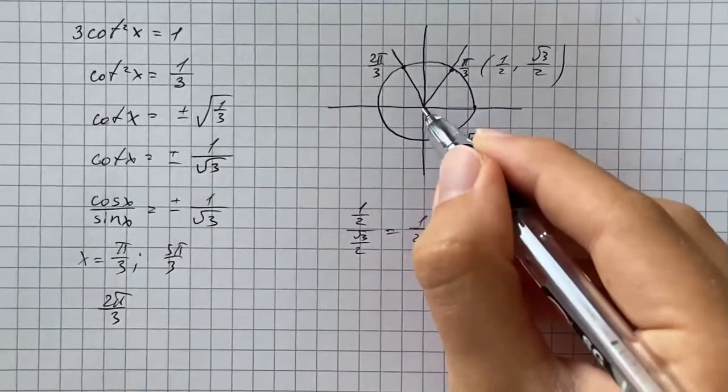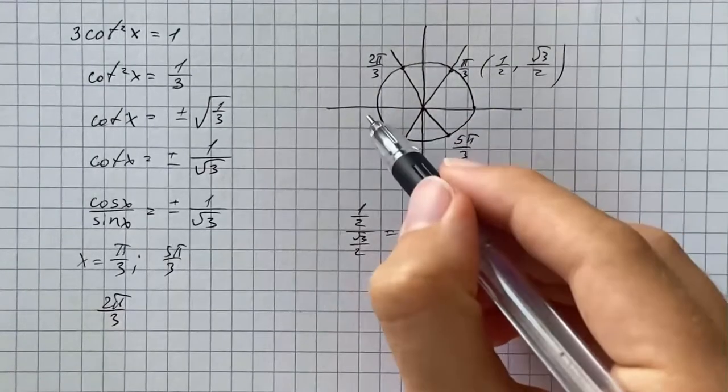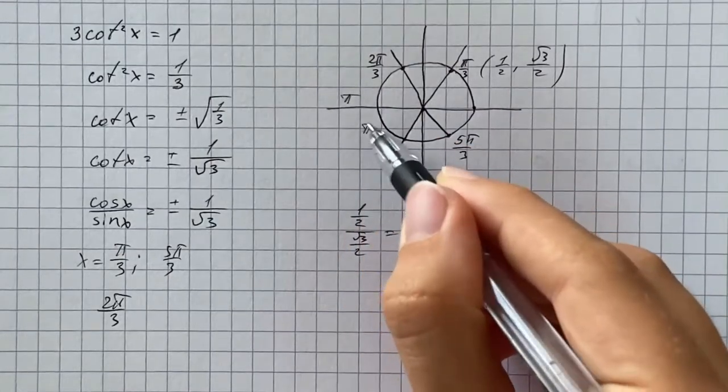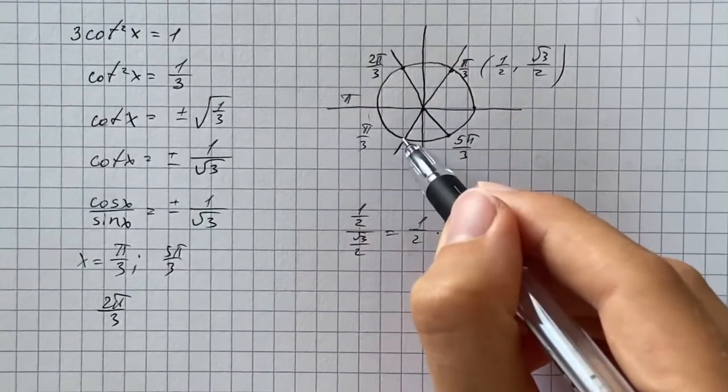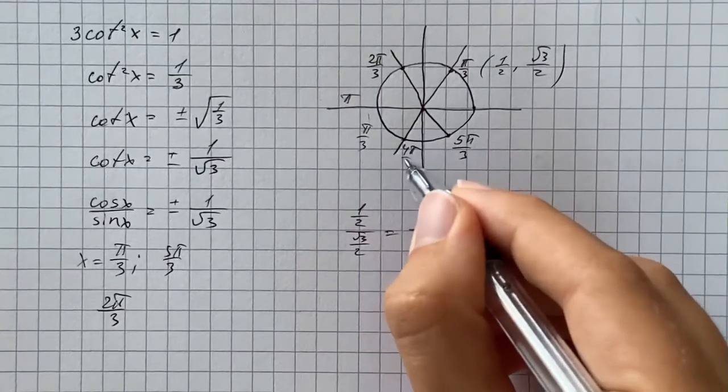And also we're going to do this in the third quadrant. So if we go halfway around the unit circle, that's going to be pi, and then another pi over 3. And therefore we get pi plus pi over 3, that's going to be 4 pi over 3.